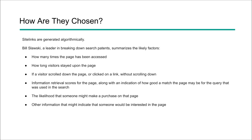So how does Google choose these? They are actually generated algorithmically. Bill Slosky, a leader in breaking down search patents, summarized the likely factors as: how many times a page has been accessed; how long people stayed on those pages; whether they scroll down and click links, engaging with those pages; what type of information is retrieved; whether it's a good match and people are finding what they're looking for; the likelihood someone might make a purchase if it's e-commerce; and other information indicating user engagement.